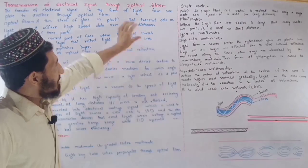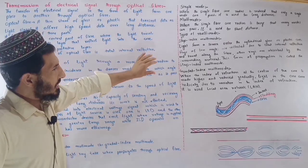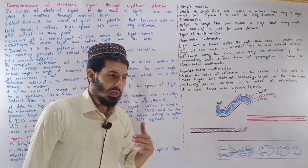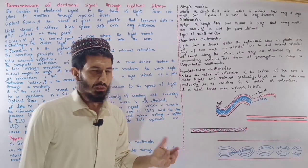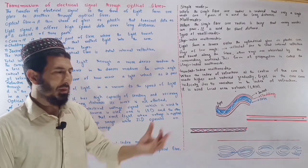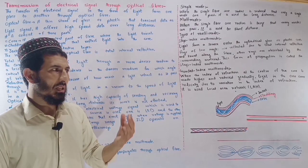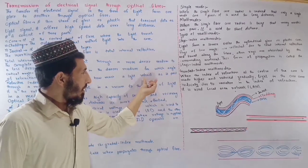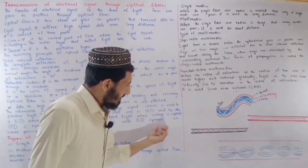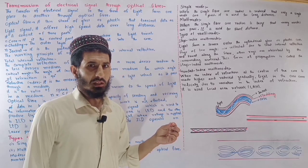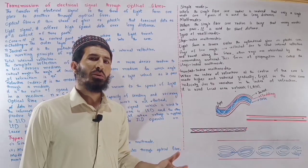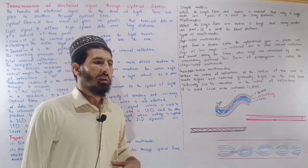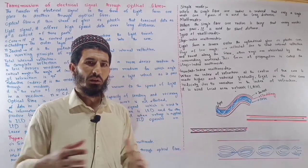If you want to see the speed of light, the speed of light will be transferred. If you want to see the data transfer, the data will be transferred. If you want to see the power, the electric field and magnetic field will be transferred.